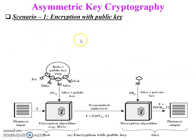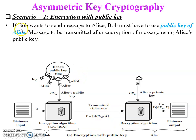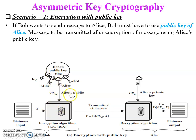Scenario one: encryption with public key. In this asymmetric cipher model, Bob is the sender and Alice is the receiver. If Bob wants to send a message to Alice, he must use Alice's public key, since Alice's public key is known by Bob. The input to the encryption algorithm is the plaintext and Alice's public key, denoted PU_A. After encryption, the output is ciphertext Y, which is then transmitted to the receiver side.